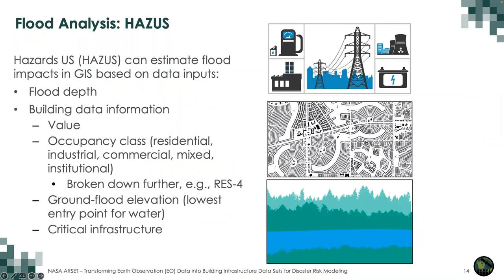For flood impact analysis, we're using Hazus — Hazards United States — an extension to GIS software for impact analysis across multiple hazards. For flood impact analysis, you need to know the flood depth under different scenarios; this is typically used for planning or preparation, not post-disaster response. For buildings, you need attributes including their value — the assessed dollar amount — and their occupancy class: whether residential, industrial, commercial or retail, commercial service like office buildings, mixed use, or institutional such as schools, hospitals, and churches.